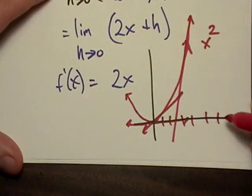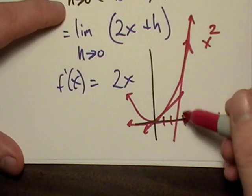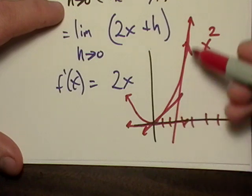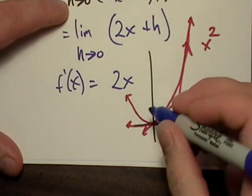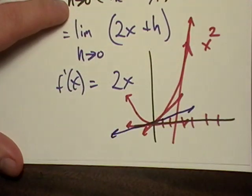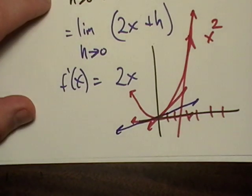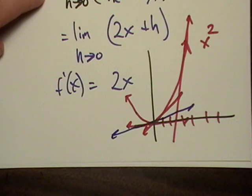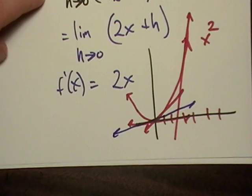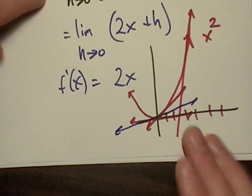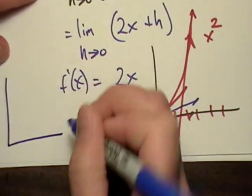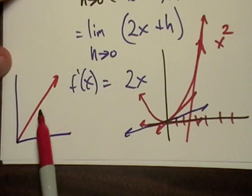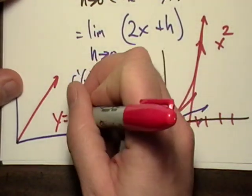Depending on what value of x I use, I'll get a different value of slope. I might get a really steep one — that would be a very high number — or I might have a real shallow one down here, and it's just barely crawling up with a real small grade to it. So it should make sense that the rate of change of a curved line is going to have a variable in it somewhere, because the slope is changing. Now if I go over here and draw a straight line — this one is y equals x — well, the slope is the same throughout the whole thing.